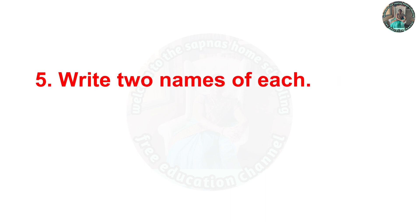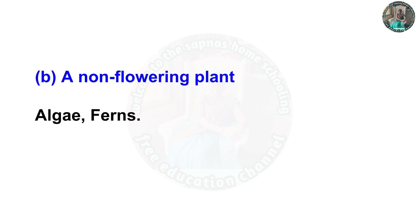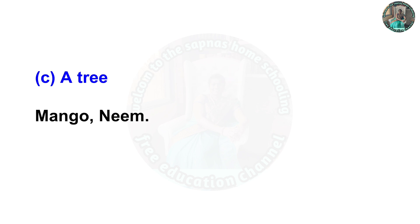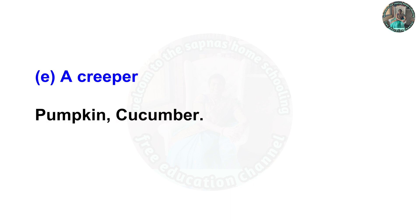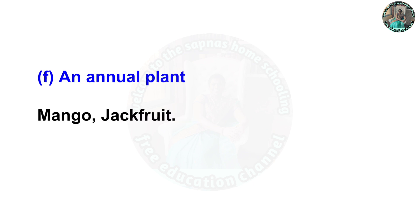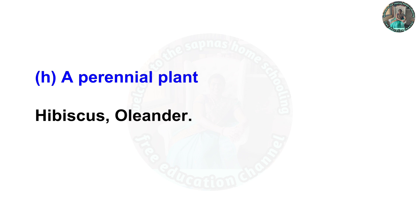Question 5: write two names of each. A flowering plant — rose and hibiscus. A non-flowering plant — algae and ferns. A tree — mango and neem. A shrub — oleander and lantana. A creeper — pumpkin and cucumber. An annual plant — mango and jackfruit. A biennial plant — carrot and beetroot. A perennial plant — hibiscus and oleander.